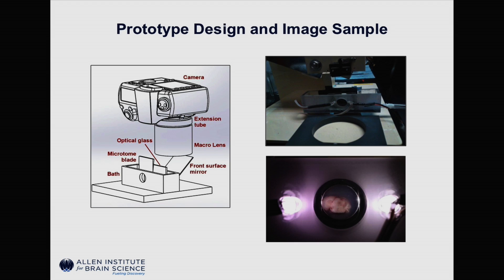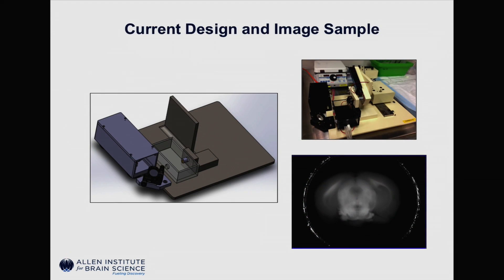Using this feedback, the engineering team came up with what we're using as our current design. One of the biggest changes was that it was determined we didn't need to use a color image — we could use a black and white camera. The only change we had to make was that we darkened our agarose to provide contrast between the tissue and the embedding material. It took up a slightly smaller footprint, so it was a little bit easier to use. Elliot will go over the design of this hardware and the software used to actually acquire the images.